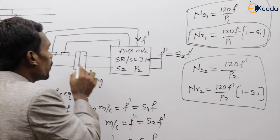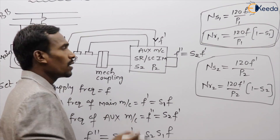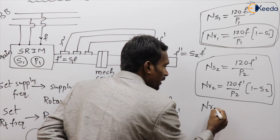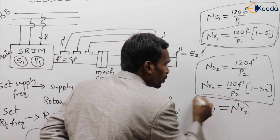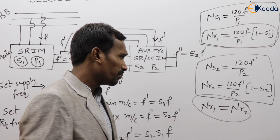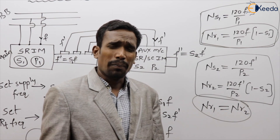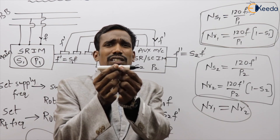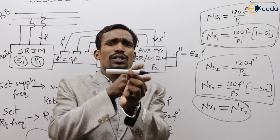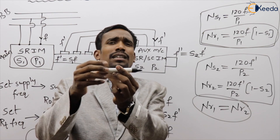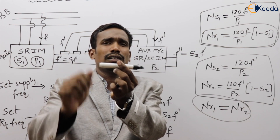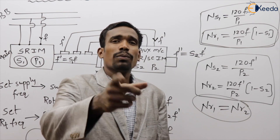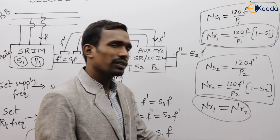Since both machines are mechanically coupled to each other, nr1 must be exactly equal to nr2. The speed of the main machine equals the speed of the auxiliary machine because both shafts are mechanically coupled. So nr1 = nr2.